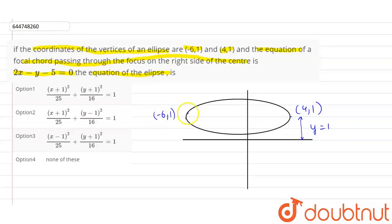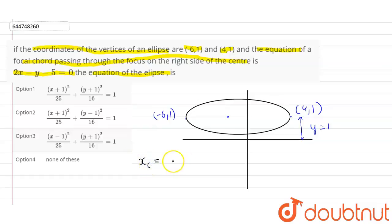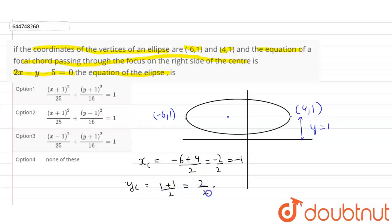As we can see in the figure, the vertices of the ellipse are given, from which we can find the midpoint of the vertices, which is the center of the ellipse. The center can be found by the midpoint of these two points: xc = (-6 + 4) / 2 = -1, and yc = (1 + 1) / 2 = 1.